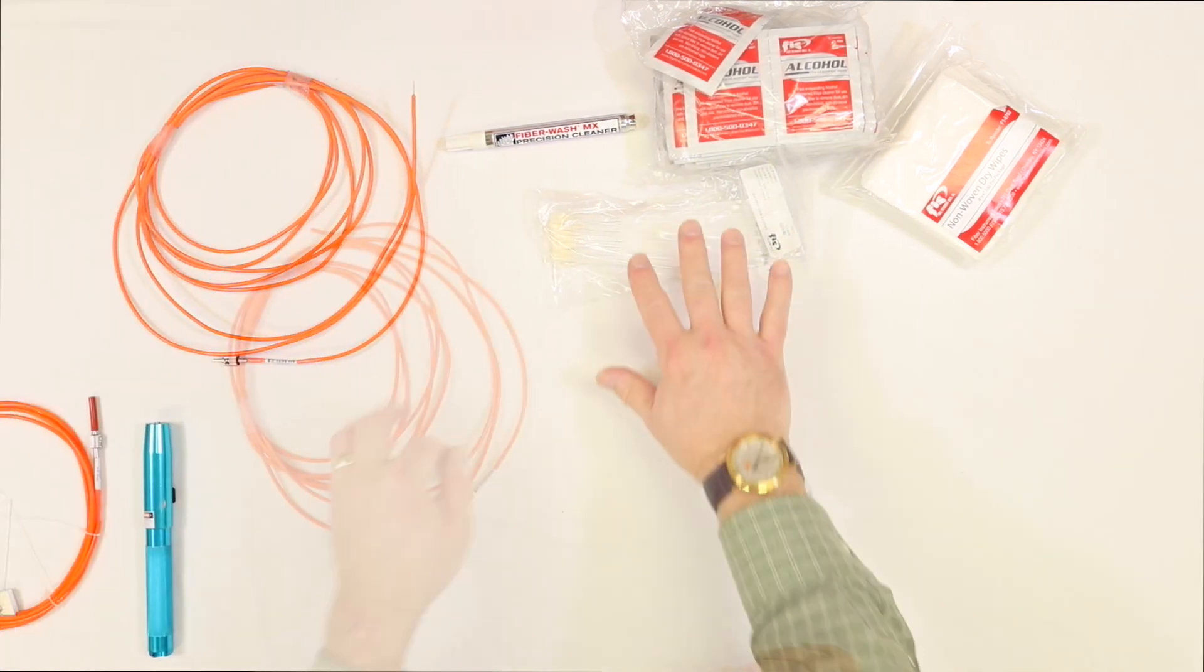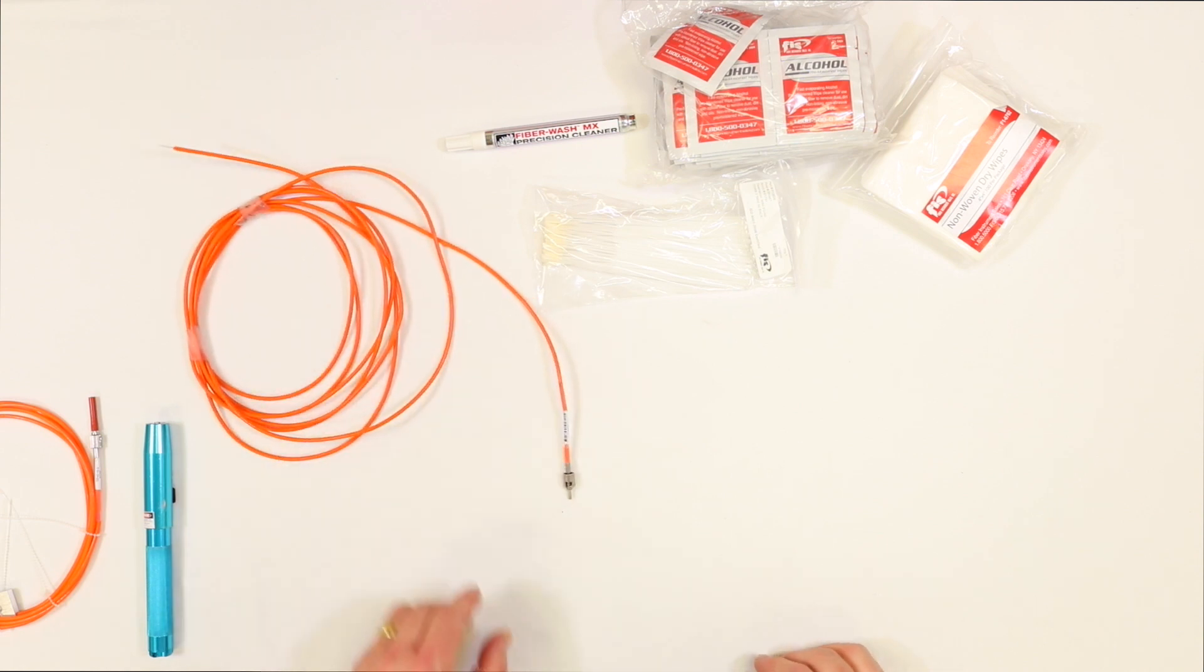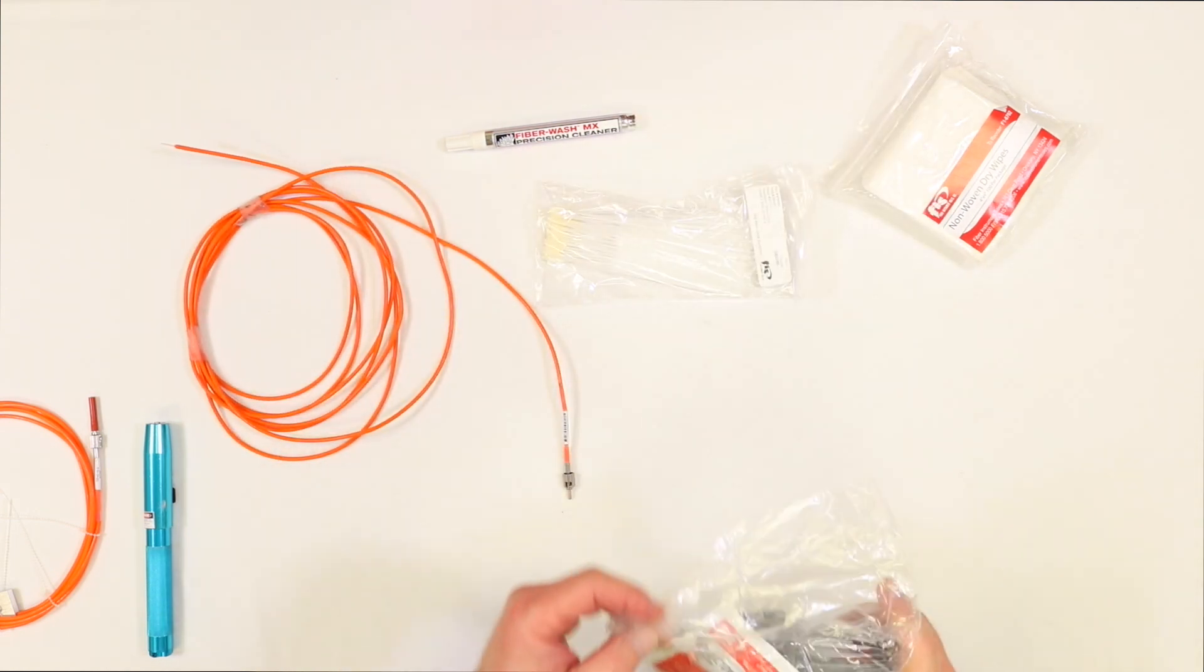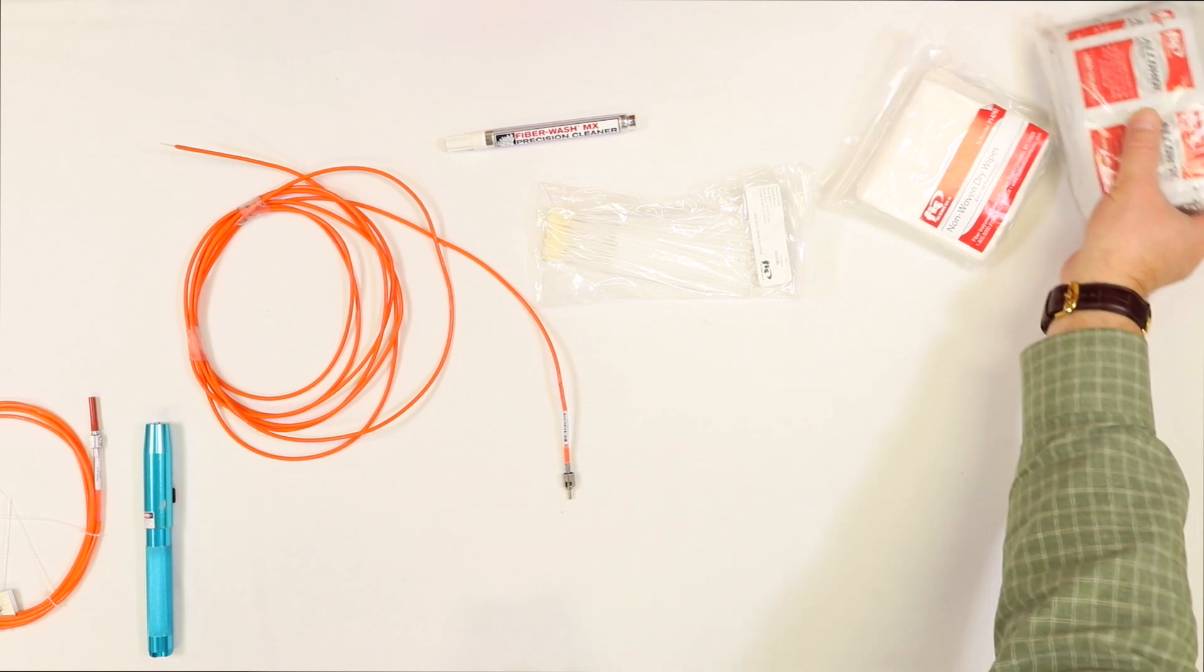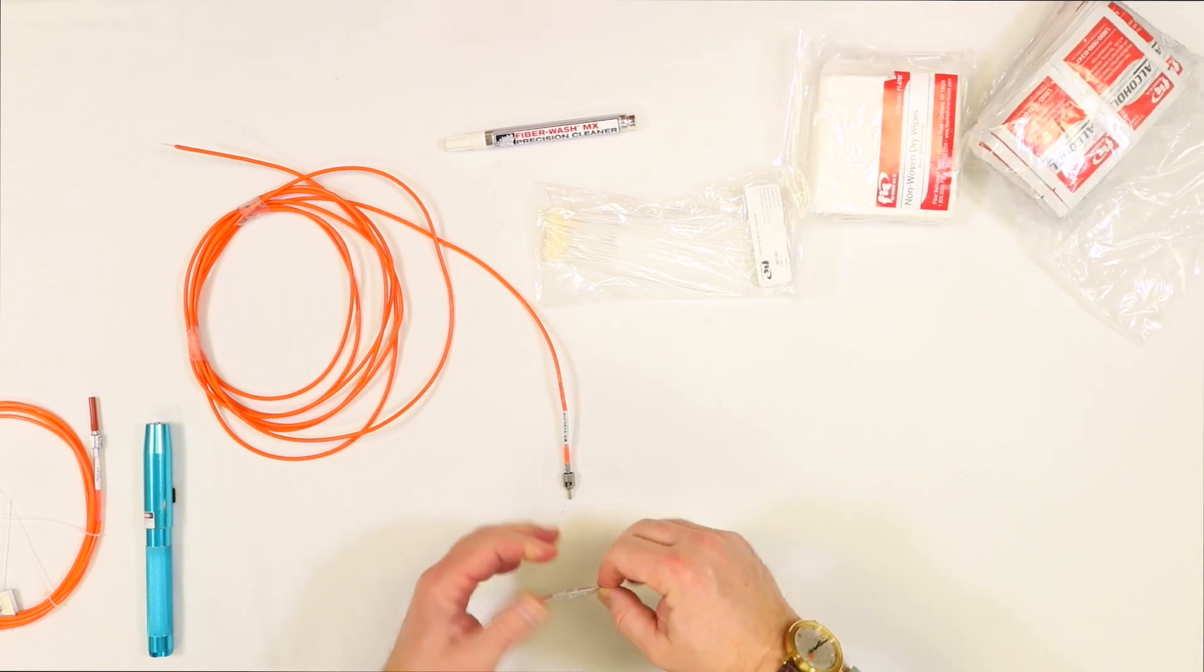So we have a fiber. It's been around the block, it's quite dirty. The first thing we're going to do is take this alcohol wipe and clean this.